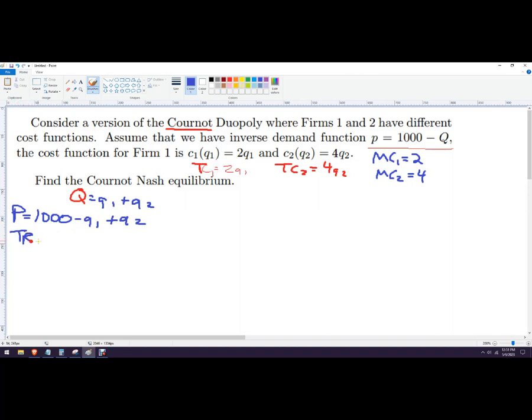So total revenue for each firm is price times quantity. So I've already got initially just Q1. I should write that as a lowercase q. Uppercase Q usually refers to the entire market. Lowercase q refers to that individual firm. So I've already got this. And so total revenue, I'm going to multiply through a Q1.